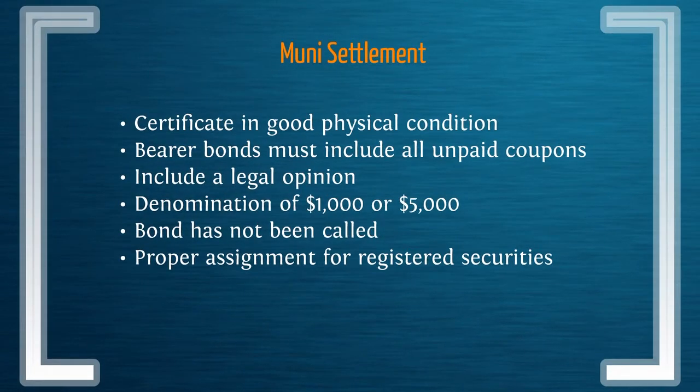Muni settlements have certain terms they need to meet to make good delivery. The certificate has to be in good physical condition, and if it's a bearer bond, it has to include all unpaid coupons. We have to have a legal opinion, denominations are $1,000 or $5,000, the bond must not have been called, and there needs to be proper assignment for registered securities.